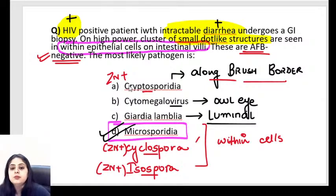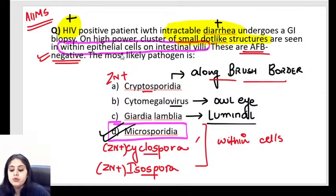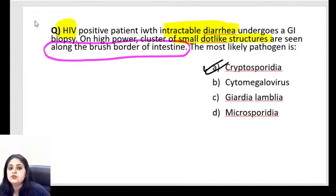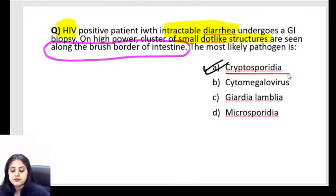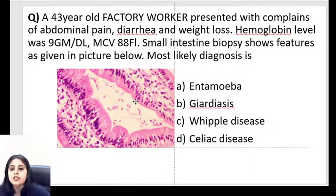You guys made a big blunder — ZN negative was written in the question and you still marked Cryptosporidium. Don't become overconfident with previous year questions. In the exam you will get very similar-looking questions — read every detail carefully. The AIIMS 2019 question about dot-like structures along the brush border had Cryptosporidium as the answer, but this variation with acid-fast negative changes the answer to Microsporidia.